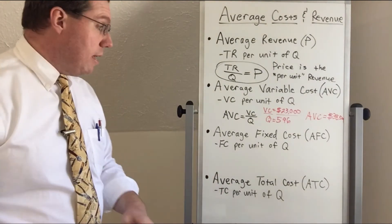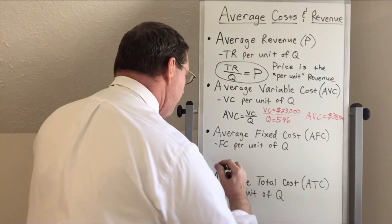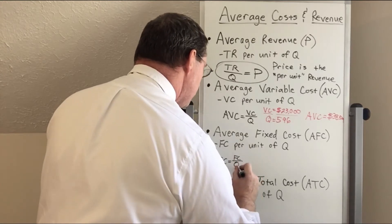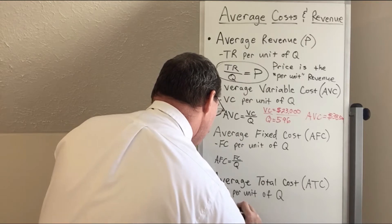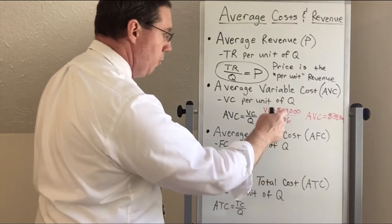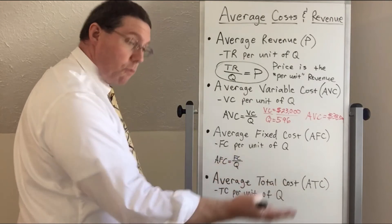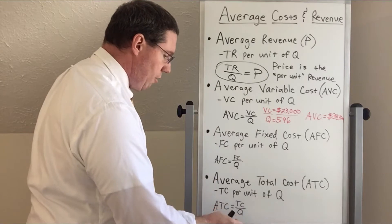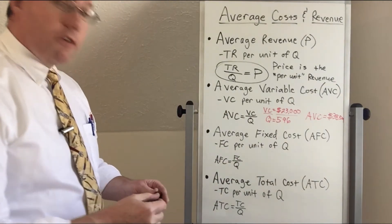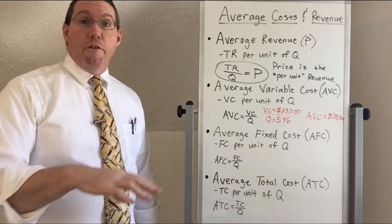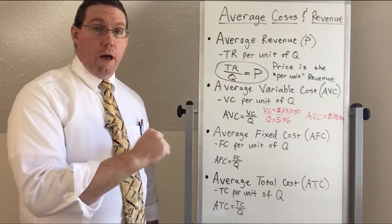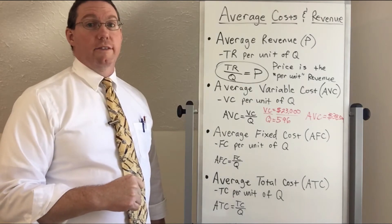It's the exact same thing for average fixed cost and average total cost. AFC equals fixed cost divided by quantity. ATC equals total cost divided by quantity. We take whatever the fixed cost is, divide by quantity, and round to the nearest penny — same for average total cost. Now let's go to our table and for the first five rows, calculate average variable cost, average fixed cost, and average total cost. Then we'll come back and I'll show you a couple interesting qualities about these three things.